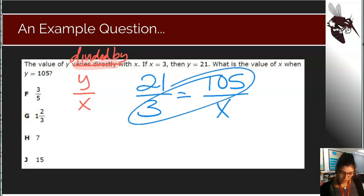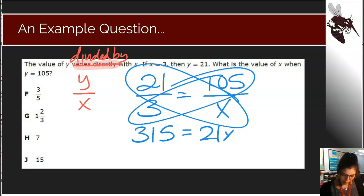Students would then use cross multiplication and division or the butterfly method to solve this equation. 105 times 3 is 315. 21 times x is 21x. Then we would divide both sides by 21. So we would get that x is equal to 15.